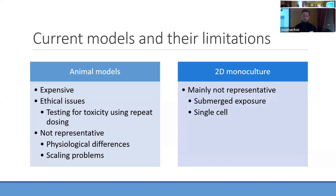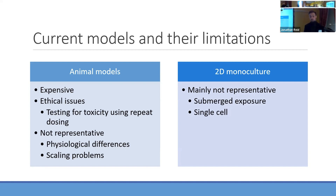The current gold standard for toxicity testing is animal models. This is usually respiratory inhalation studies done in rodents. But they have their set of limitations, even though they've been used for at least 100 years now to test toxicology. The main issues are they're quite expensive, they have ethical issues, but mainly they're not representative of human physiology, and they have issues scaling if you're doing any sort of drug administration.